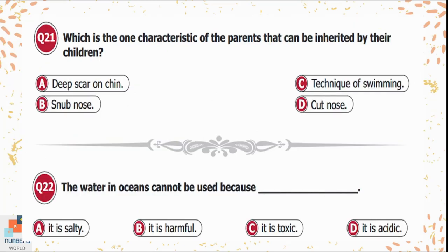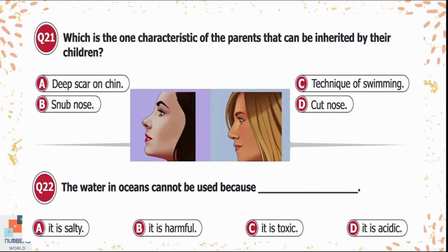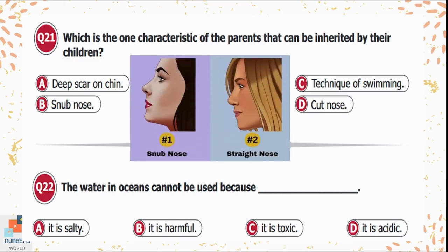Question 21: Which is a characteristic of parents that can be inherited by their children? Option A: a deep scar on the chin — this can result from a wound, not genetics. Option B: a snub nose — this is a type of nose shape that is inherited. Option C: a technique of swimming. Option D: a cut on the nose. Option B is the only correct answer.